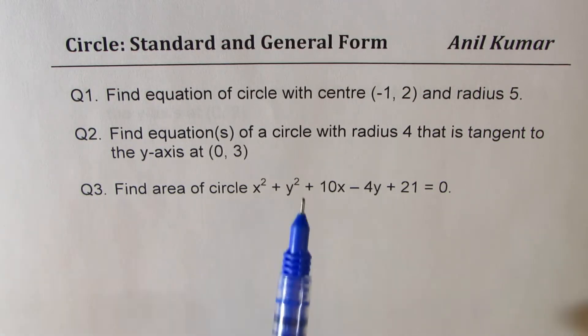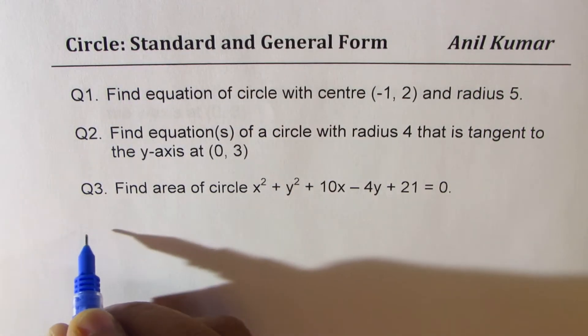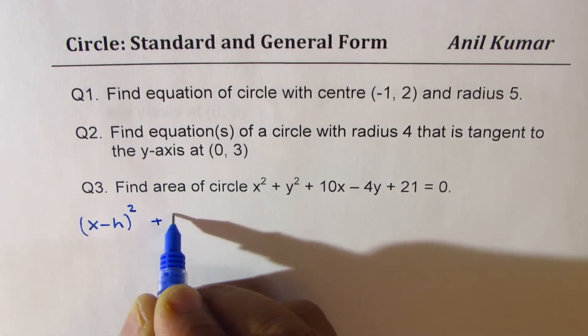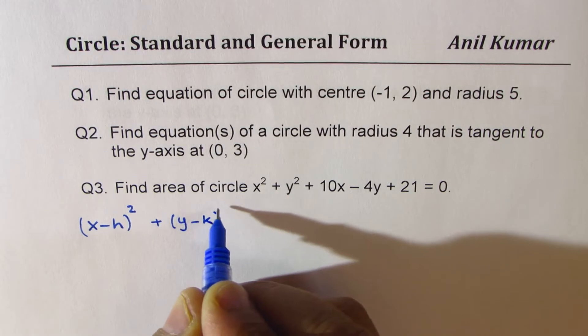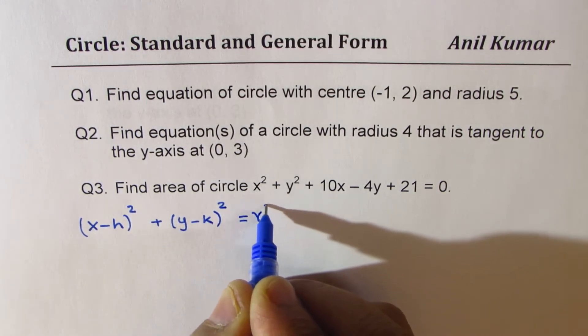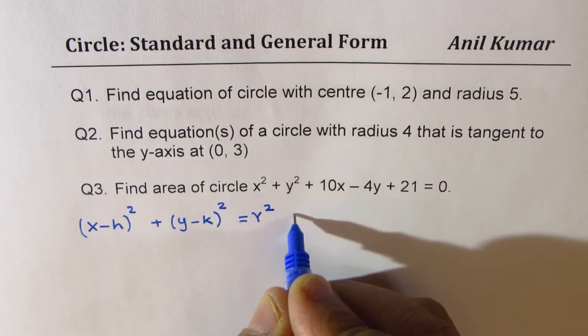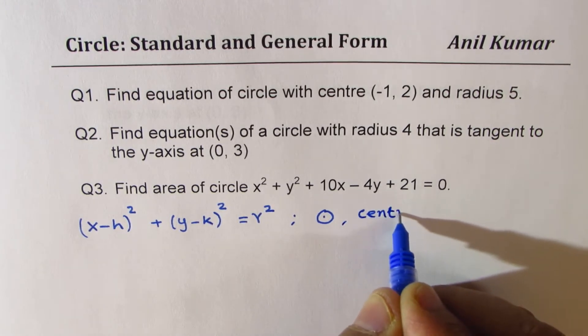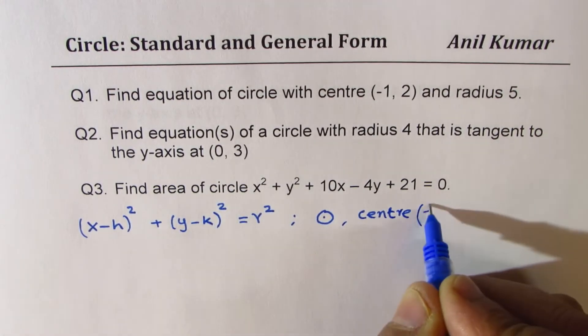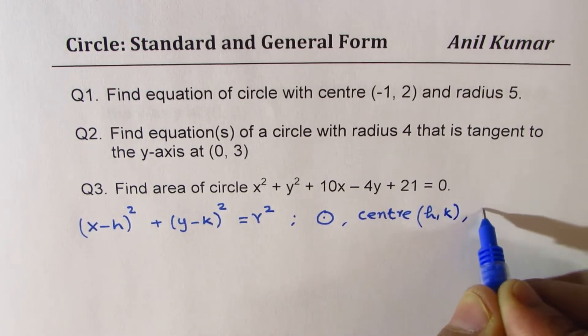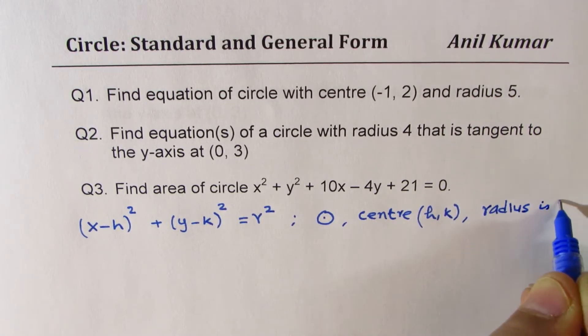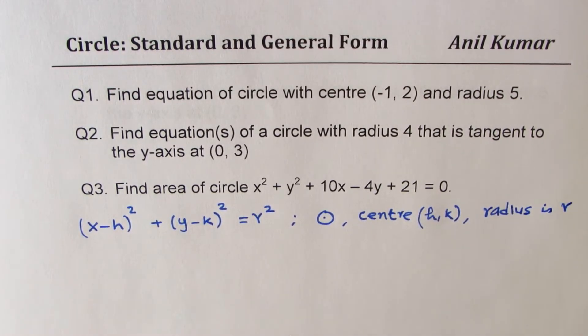Now to begin with, equation in standard form is given as (x - h)² + (y - k)² = r². Now in this equation, the center of the circle is at h and k, and the radius is r. And when you write in this form, it is called standard equation of circle.